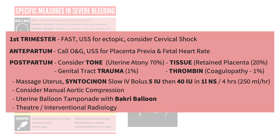For postpartum hemorrhage, we consider the four T's: tone, tissue, trauma, and thrombin — or abnormal coagulation — remembering that by far the most common cause is uterine atony, a lack of tone in the uterus. We would massage the uterus manually, give IV syntocinon or oxytocin, consider manual aortic compression, and balloon tamponade with a device called a BAKRI balloon, which also has its own quick reference guide in our department. We then get definitive operative or interventional radiology control of the hemorrhage.